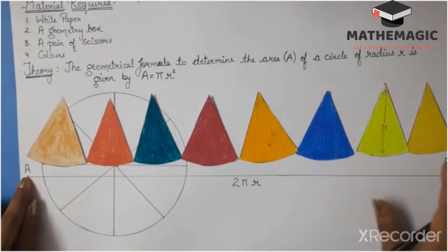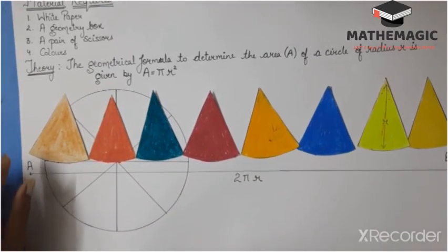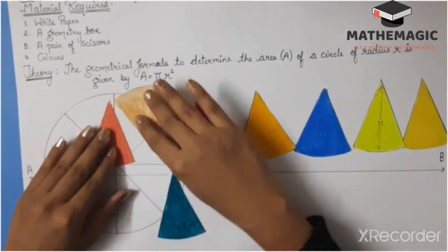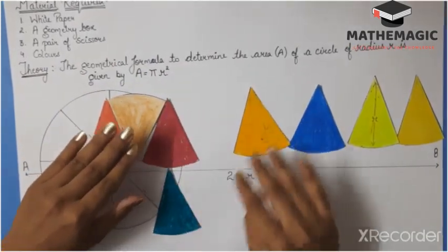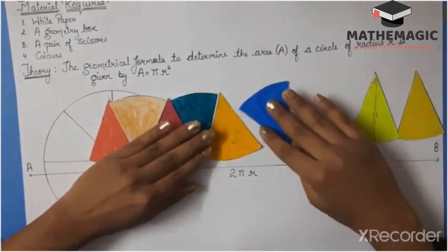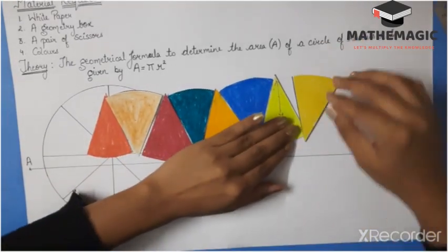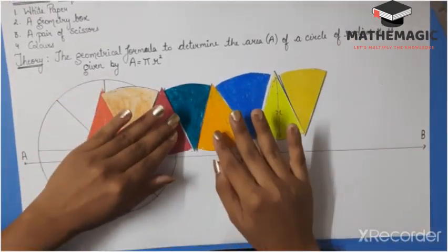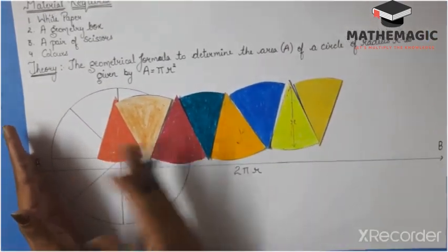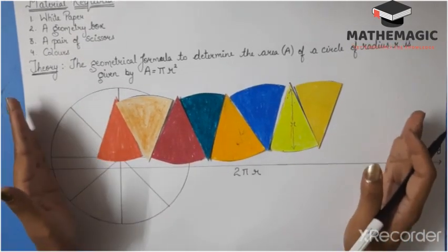Now, place the parts on the white paper to form a geometrical figure of a parallelogram. Let's arrange it. Now, here you can see that I have arranged all the parts and this shape actually resembles a parallelogram.